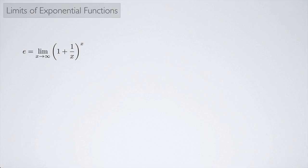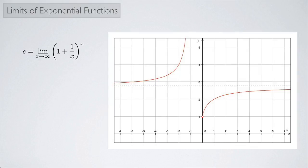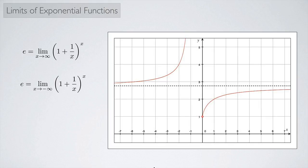One more important fact: it's possible to define e as a limit. e equals the limit as x approaches infinity of 1 plus 1 over x to the x power. Looking at the graph of this function, there's an open circle at x equals 0 and a horizontal asymptote at e — approximately 2.718. As x goes to either positive or negative infinity, the function approaches this asymptote. This can also be rewritten as the limit as x approaches 0 of 1 plus x to the 1 over x power, and this is how some textbooks define the constant e.